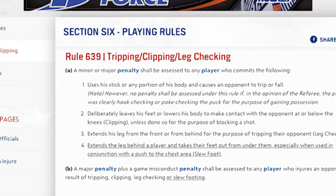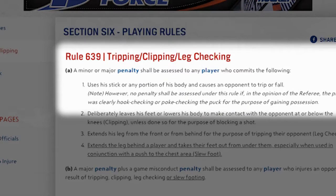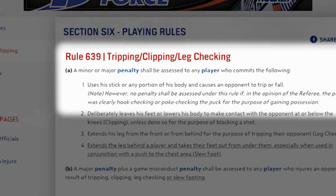Rule 639 clearly states a minor or major penalty shall be assessed to any player who commits the following. Number one, for tripping, it states: uses his stick or any portion of his body and causes an opponent to trip or fall. However, no penalty shall be assessed under this rule if, in the opinion of the referee, the player was clearly hook checking or poke checking the puck for the purpose of gaining possession.